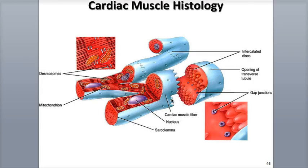They resemble, in these illustrations, the interlocking grooves of jigsaw puzzle pieces, which creates a very strong connecting joint between adjacent cardiac muscle fibers. The discs consist of two cellular junction components: desmosomes, which attach the fibers to each other,